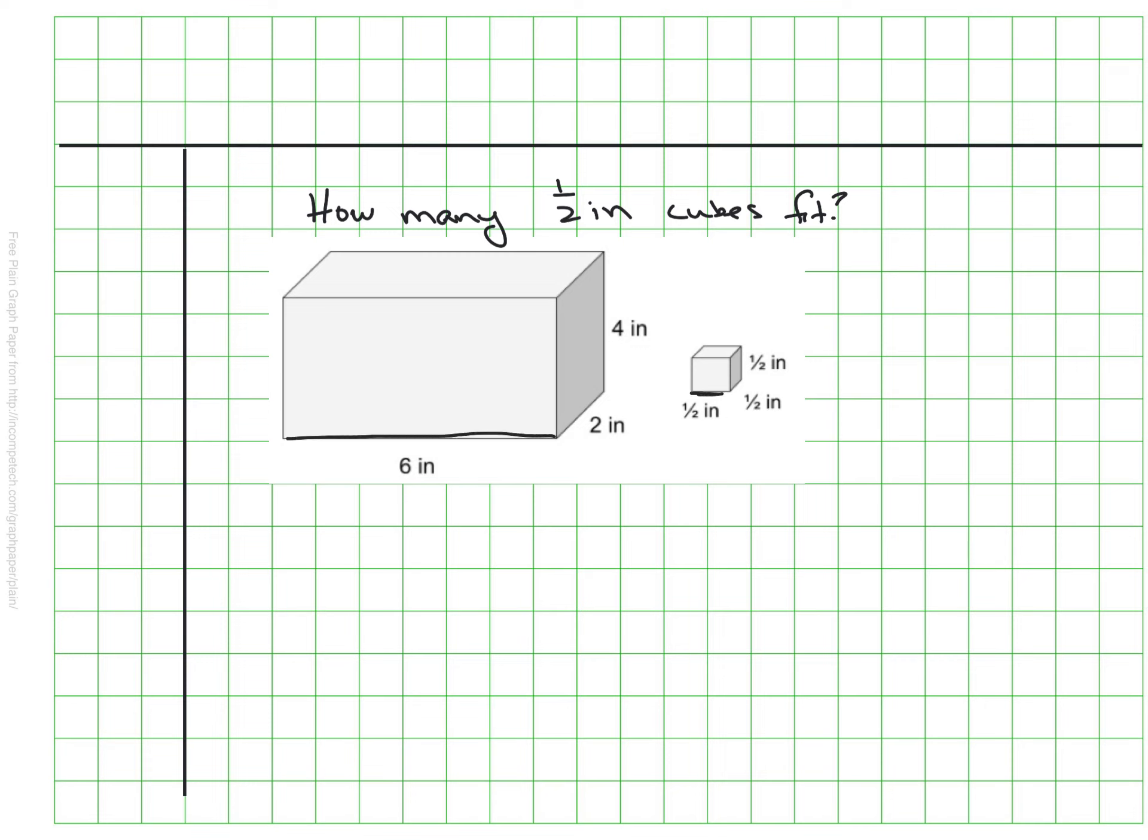So if we think about how many will fit along the bottom here, if each one of these is only one half inch, I'm going to be able to fit 12 across the bottom, because they only take up half an inch each. And 2 halves would equal that hole as I count up towards 6.